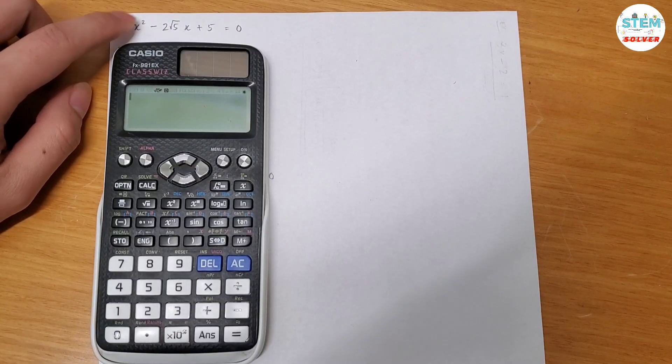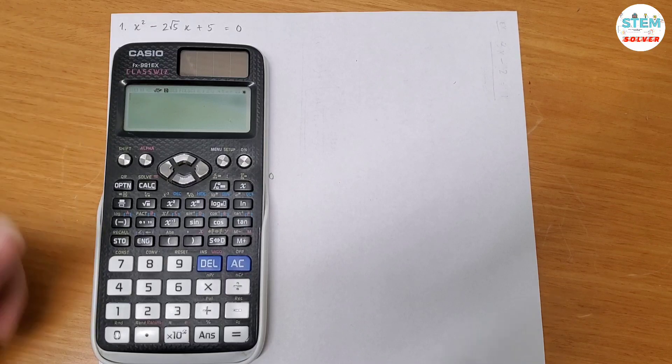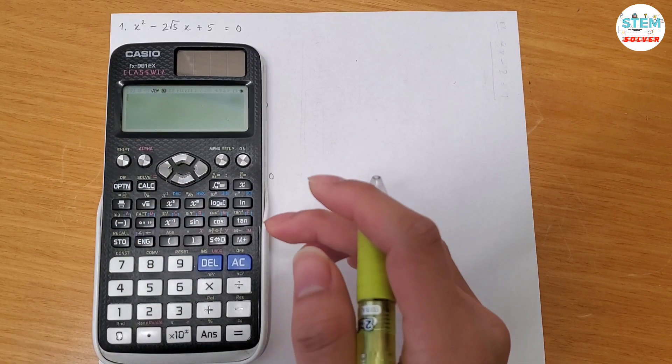So as you can see, I have x² - 2√5x + 5 = 0. So how do you solve for this using a calculator? Very simple, just one hit and you get the answer right away. Okay, let's go over the solution.